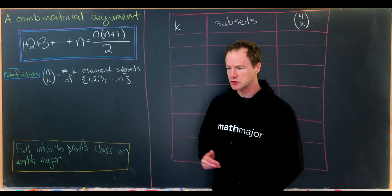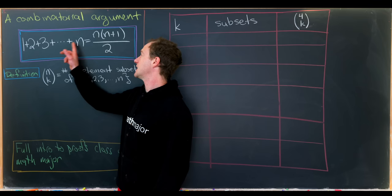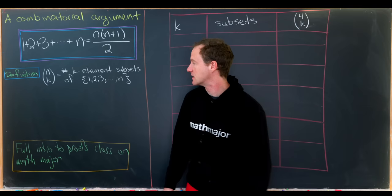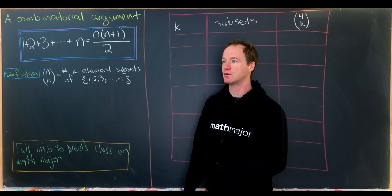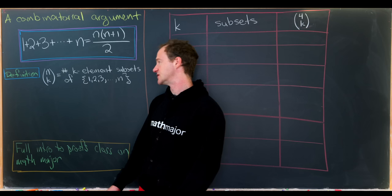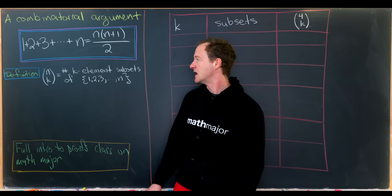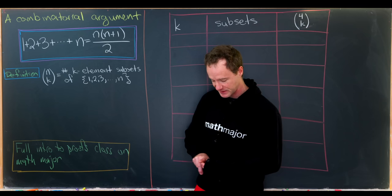So let's recall the closed form of a triangular number before we get into it. It says that 1 + 2 + 3 + ... + n is equal to n times (n+1) over 2. In order to make our combinatorial argument, we will count subsets of a certain set. So let's recall the notation for that: the binomial coefficient n choose k is defined to be the number of k-element subsets of the set containing n elements, 1 up to n.